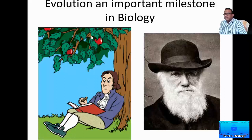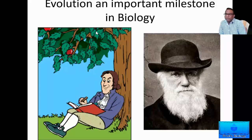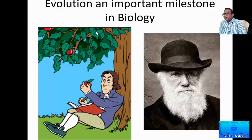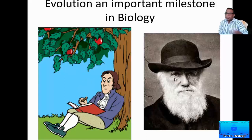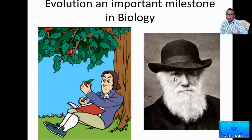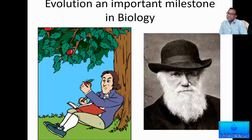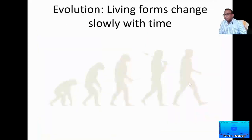Darwin's discovery became such an important milestone that we can compare it with the discovery of gravity by Newton. Just like gravity, evolution was there all the time but nobody could discover it. Newton, because of his keen observation, was the first to discover gravity. Similarly, even evolution was discovered by Charles Darwin — it was happening all the time but for the first time it was discovered by him. You can compare this with one of the important classical discoveries of physics, which is the discovery of gravity by Newton.